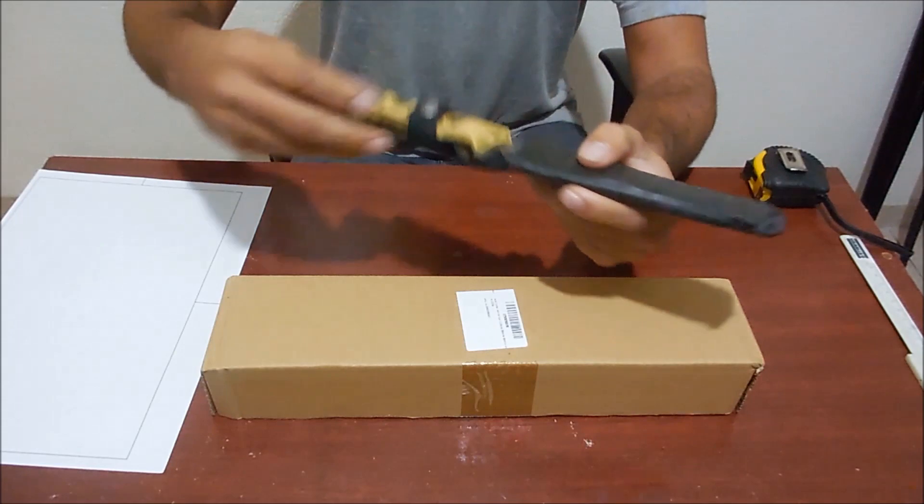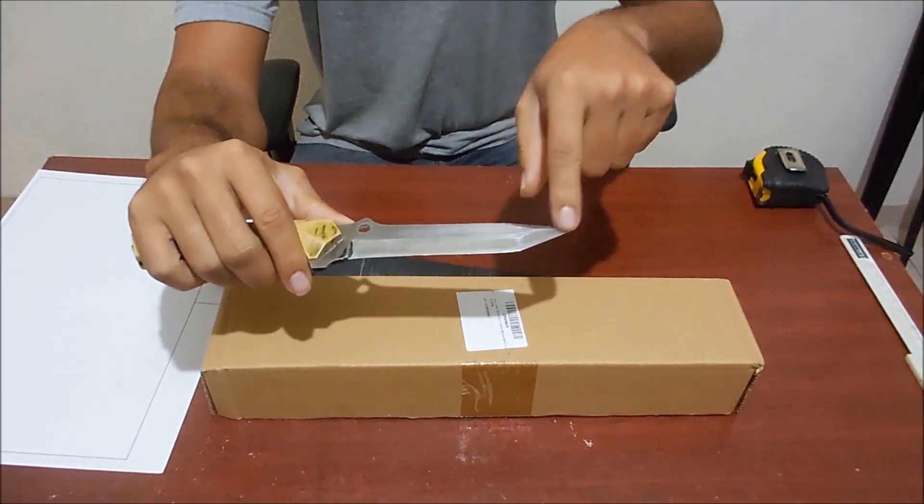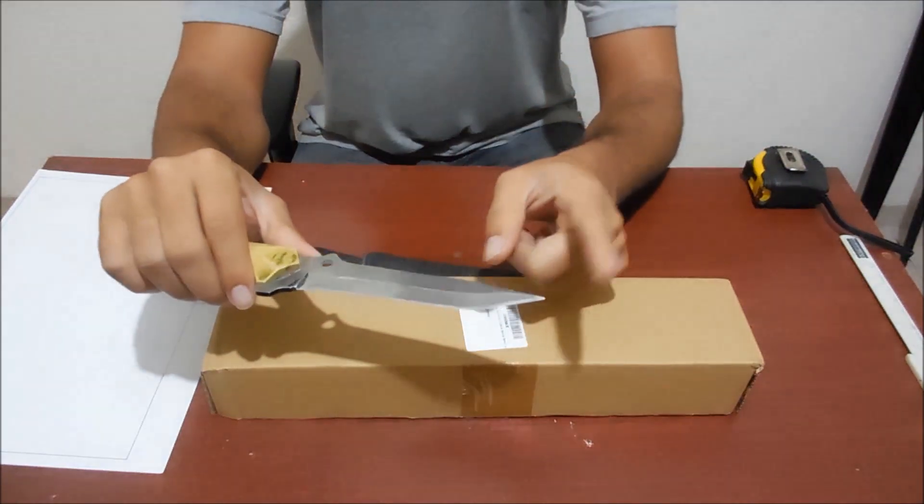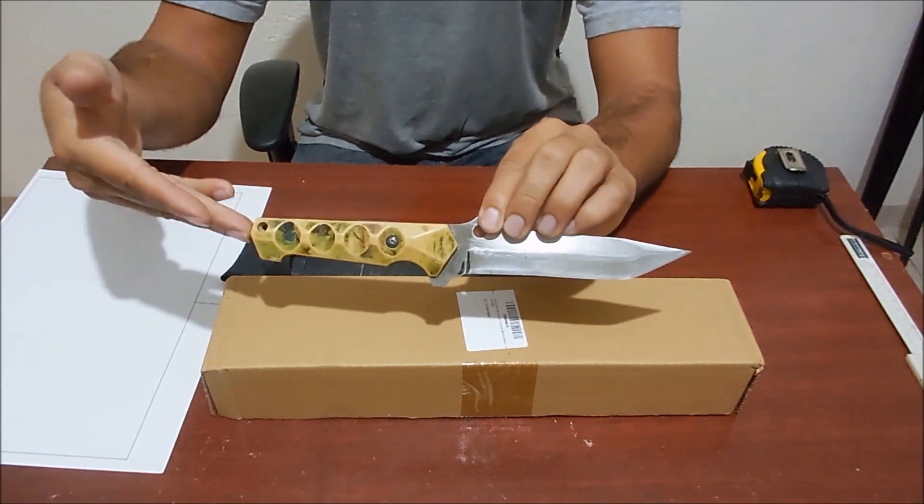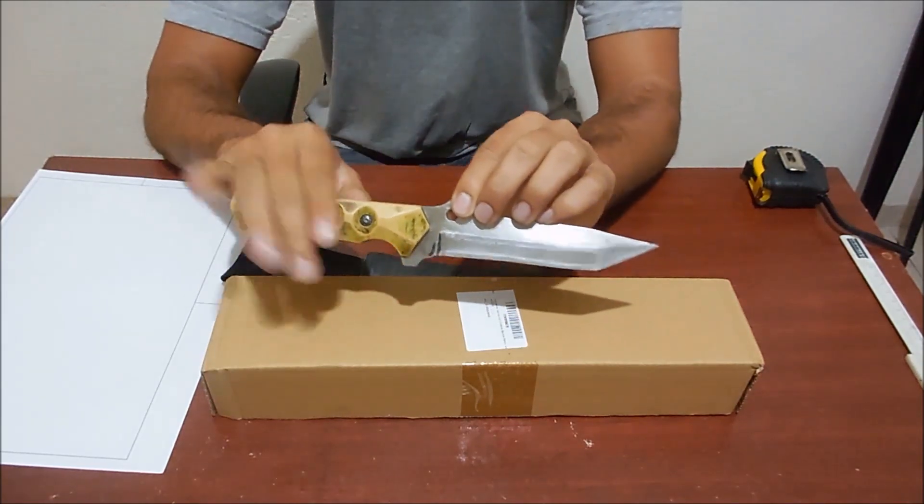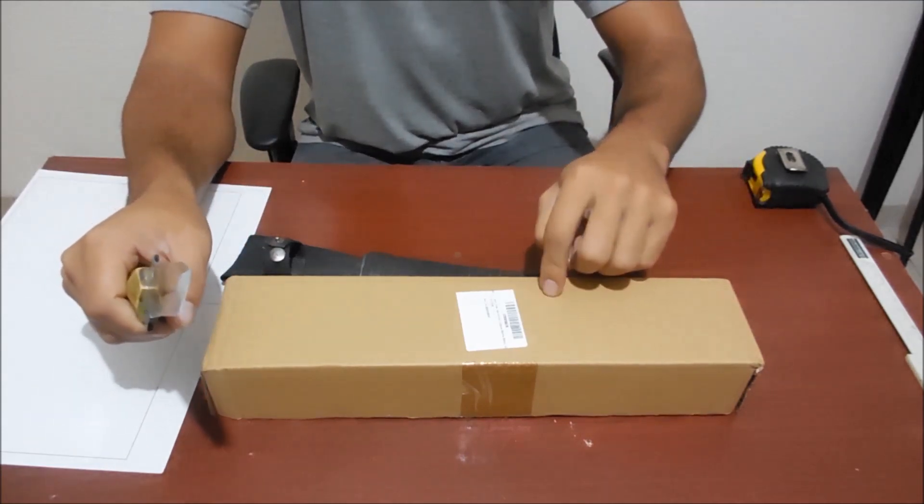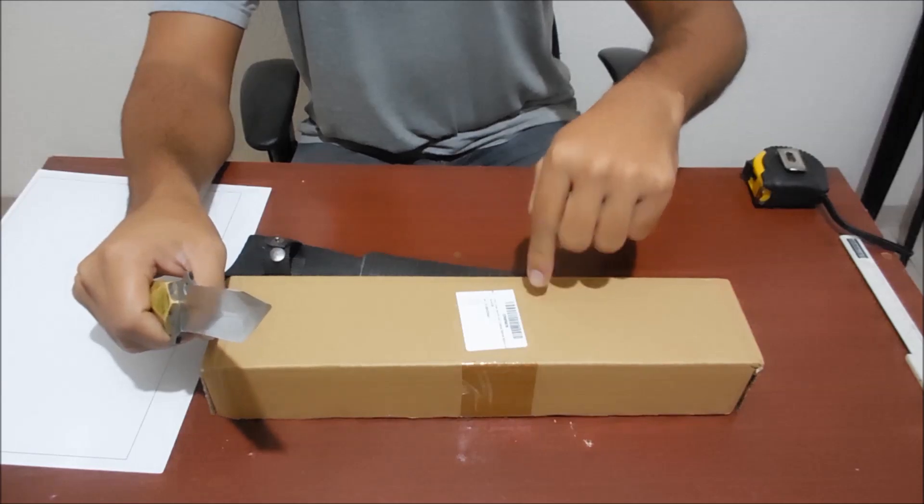Usually what we have are some blades like this one that have this distinctive triangular point and they call this Tanto point and they call this a Tanto. But this is not a Tanto. So this is the reason why I looked to buy this item.